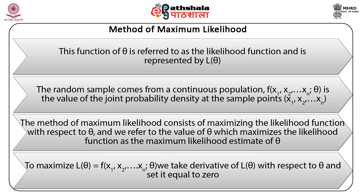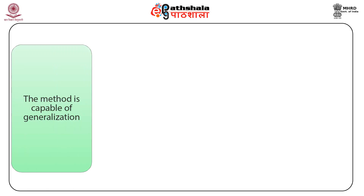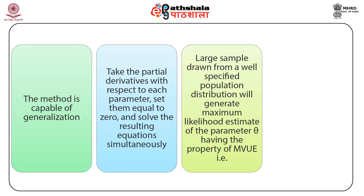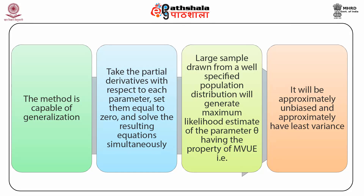To maximize L(theta) = f(x1, x2, ..., xn; theta), we take the derivative of L(theta) with respect to theta and set it equal to 0. The method generalizes: when there are several parameters, we take the partial derivatives with respect to each parameter, set them equal to 0, and solve the resulting equations simultaneously. Moreover, a large sample from a well-specified population distribution will generate a maximum likelihood estimate having the property of MVUE — that is, it will be approximately unbiased and approximately have least variance.